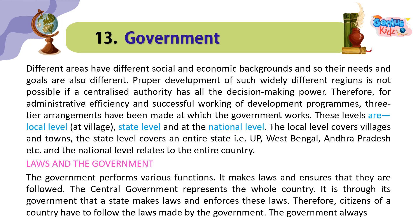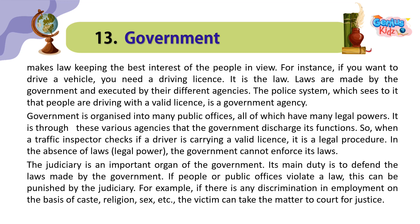Laws and the Government. The government performs various functions. It makes laws and ensures that they are followed. The central government represents the whole country. It is through its government that a state makes laws and enforces them. Therefore, citizens of a country have to follow the laws made by the government. The government always makes laws keeping the best interests of the people in view. For instance, if you want to drive a vehicle, you need a driving license — it is the law. Laws are made by the government and executed by their different agencies. The police system, which sees to it that people are driving with a valid license, is a government agency.